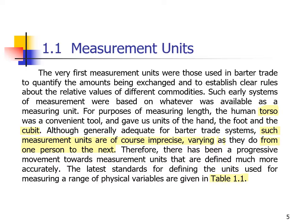The first measurement units were those used in barter trade to quantify the amounts being exchanged and to establish clear rules about the relative values of different commodities. The barter system required equalizing the exchange — for example, 1 kg of something would be exchanged for 1 kg of something else. Early systems of measurement were based on whatever was available as a measuring unit. For the purpose of measuring length, the human torso was a conventional tool, giving units of the hand, the foot, and the cubit.